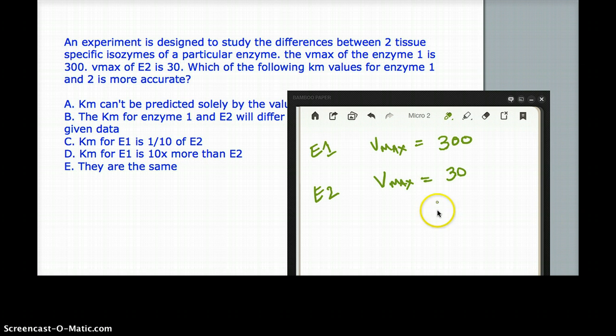Which of the following Km values for enzyme 1 and 2 is more accurate? So pretty much we need to find the Km values for this or we need to kind of interpret the Km values from this.